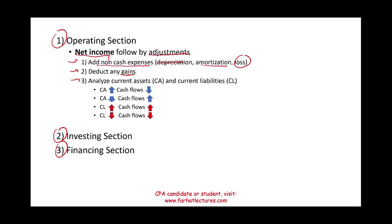I want to take advantage of this to look at a comprehensive example — the why is in the prior session. Then we analyze current assets and current liabilities and see how they relate to cash flows. If your current assets increase from the prior year it's a negative to cash. There is an inverse relationship between current assets and cash flows, and a direct or positive relationship between current liabilities and cash flows. So if you borrow money your cash goes up; if you pay down loans your cash goes down.